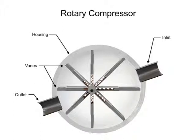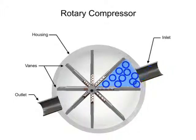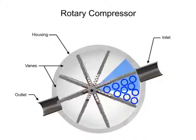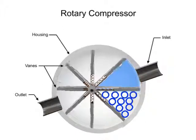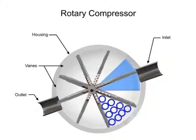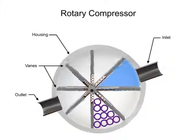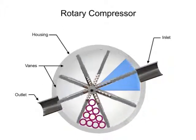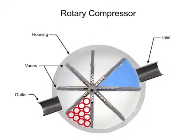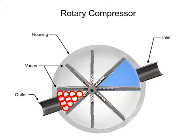Air enters at the largest chamber. As the vanes rotate, they retract, causing the chamber to get smaller and compress the air. Air exits at the smallest chamber.